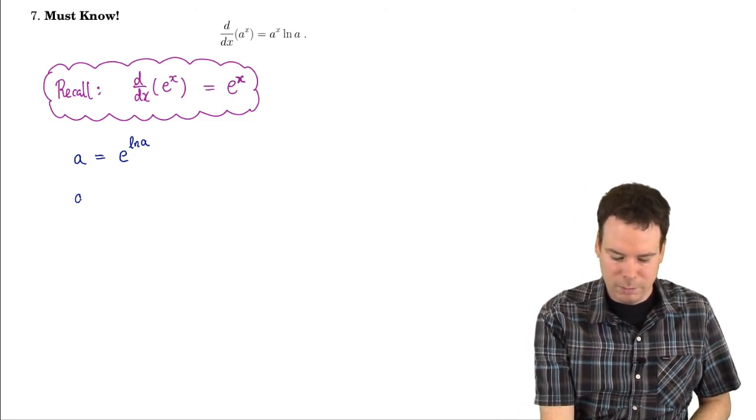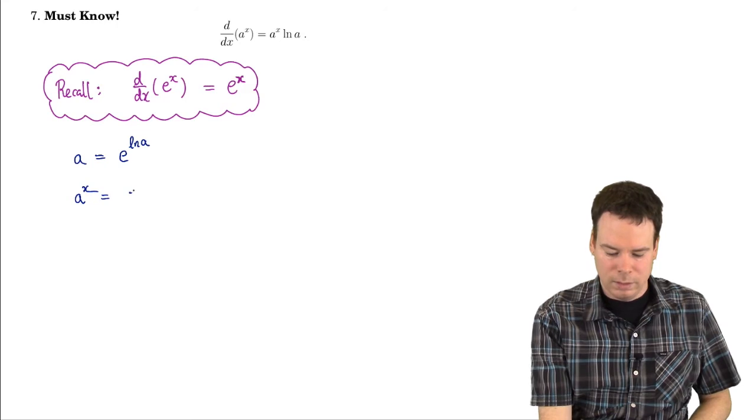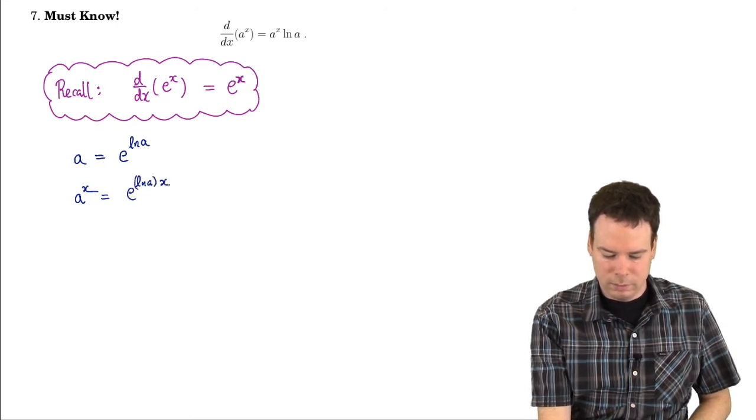Okay, so what does this mean? It means that a to the x is e to the ln of a times x.